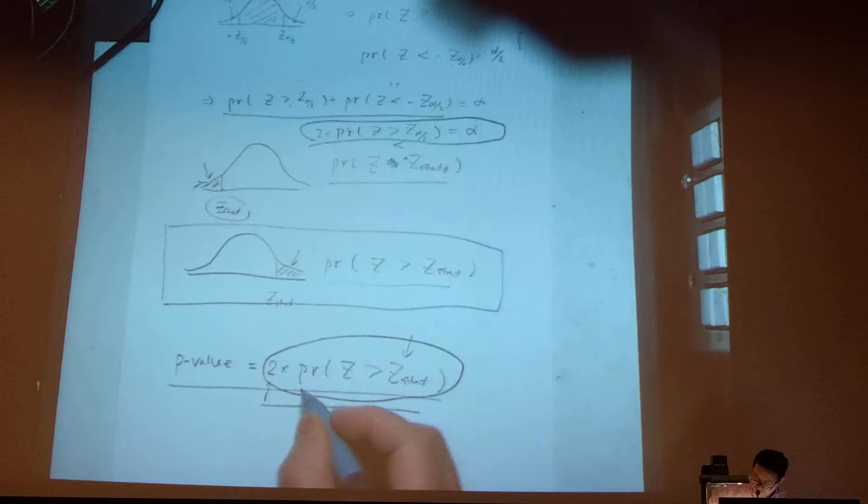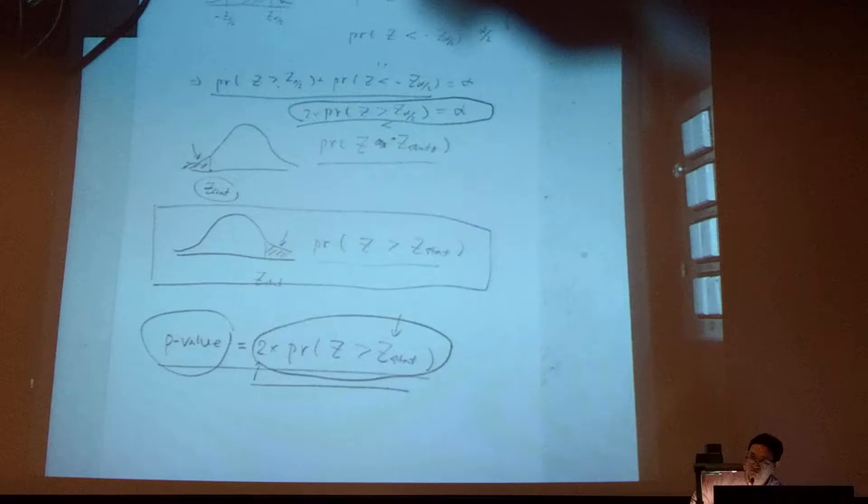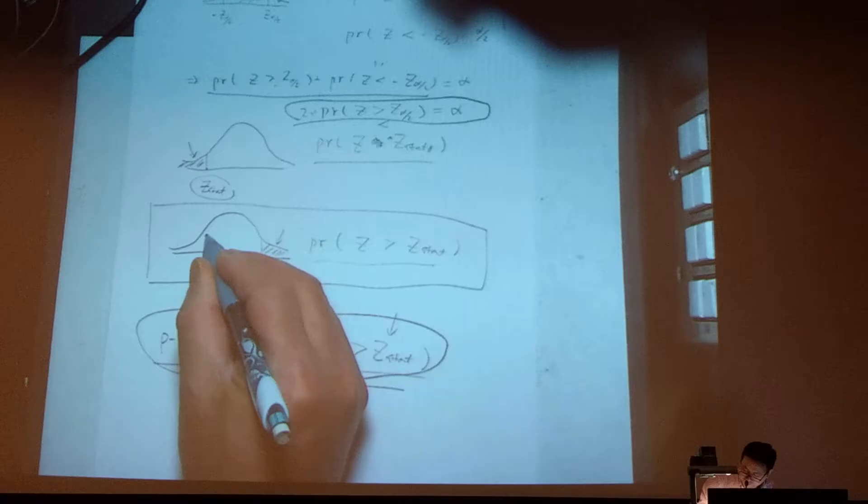Right? When that becomes derivative, it's an overlap. The test statistics is exactly just at the same point as the critical value. Then the probability will be the same. So this is actually the one that we need, the P-value.